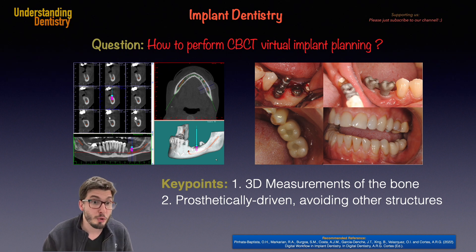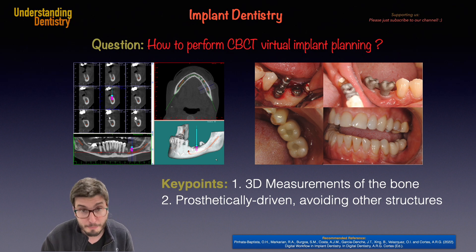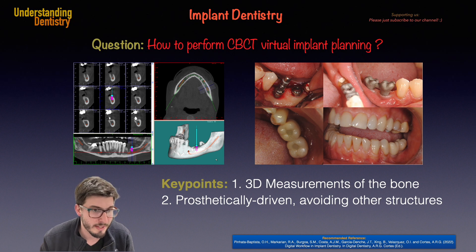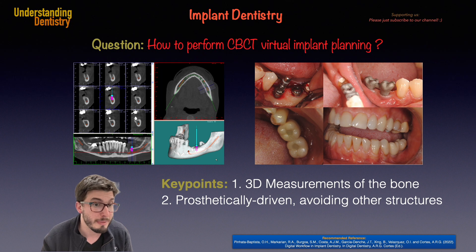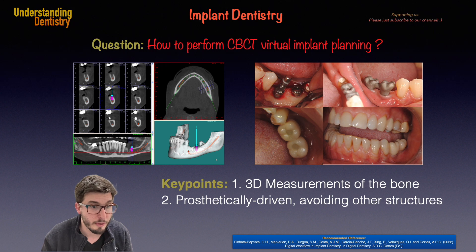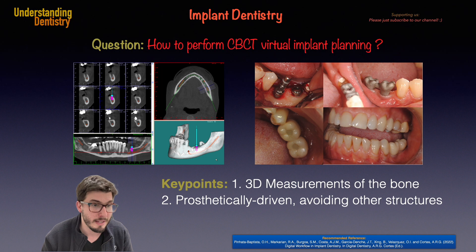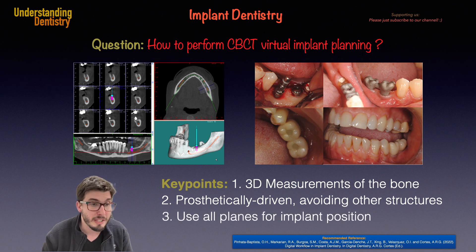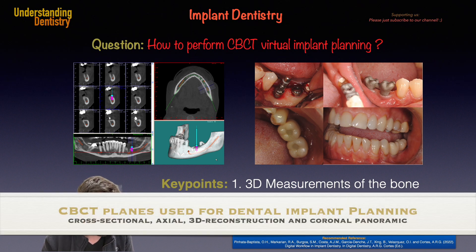Since implant planning should be prosthetically driven, we should start from a conventional or digital wax-up. It's easier if we can see the virtual wax-up superimposed onto the CBCT images. That's why it's very important to define the ideal position of our dental implant using all the planes available on the CBCT image. On the top left, you can see nine cross-sectional CBCT images.